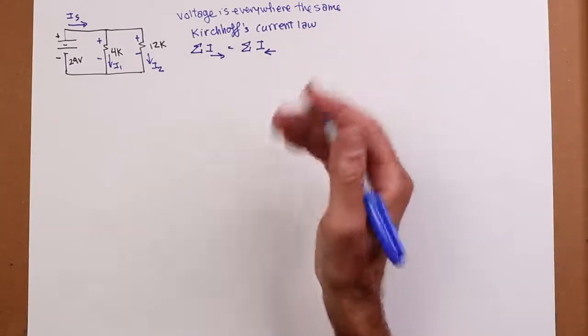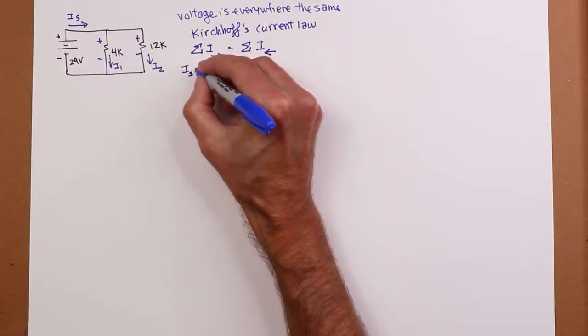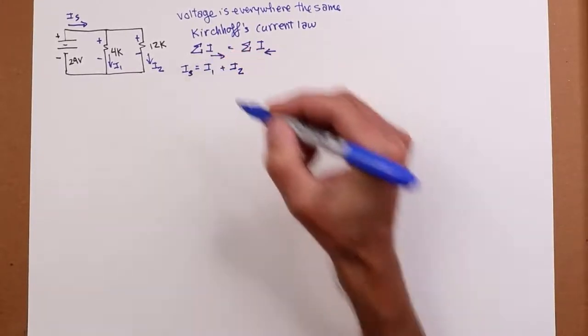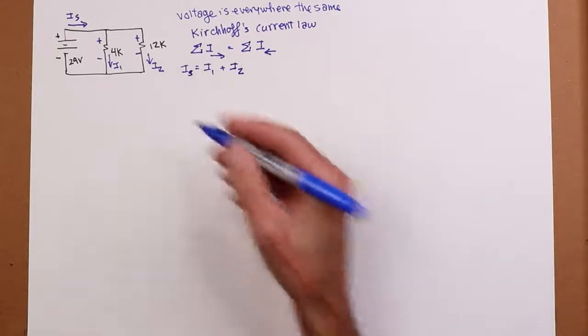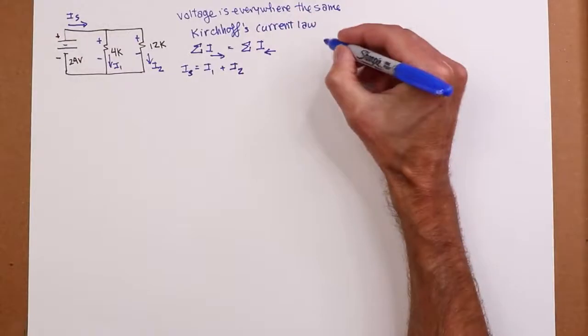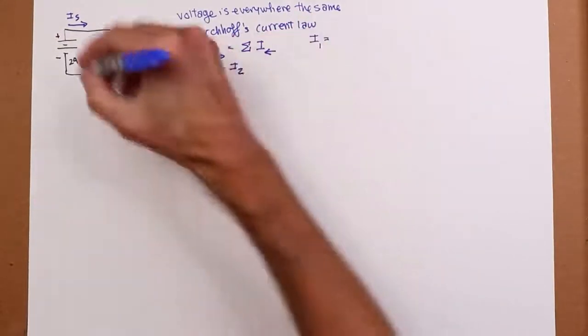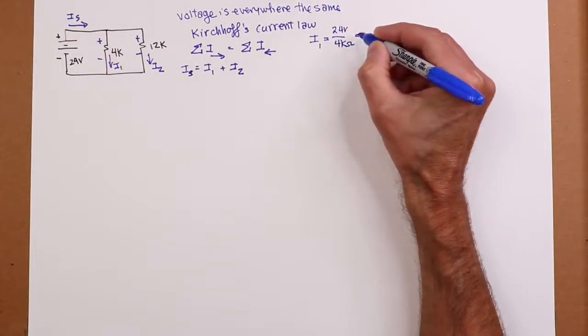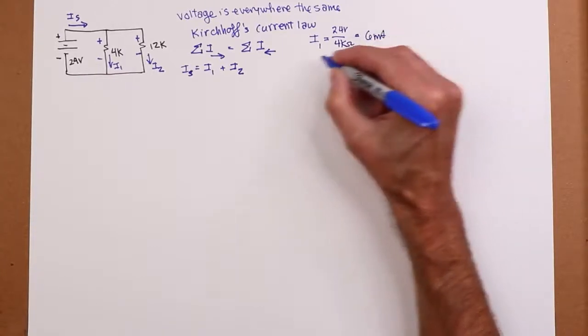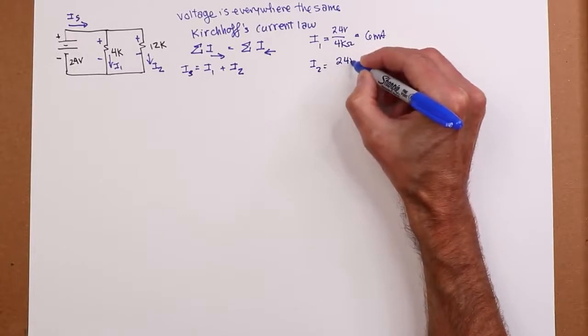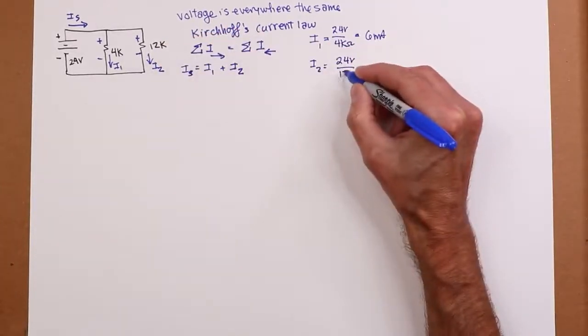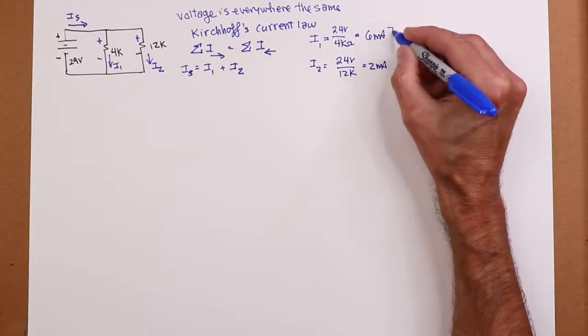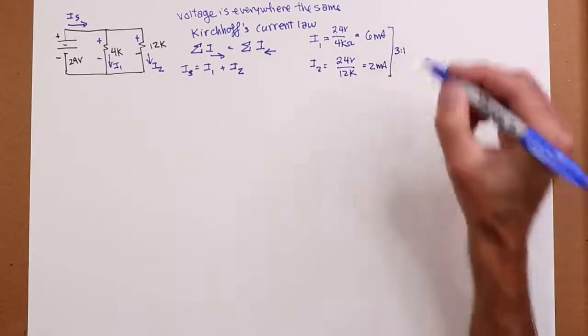Now, given that, we can say that Is has to equal I1 plus I2. How do we find those various currents? Well, a direct application of Ohm's law. The voltage is the same everywhere. So I1 would have to equal the 24 volts divided by R1, 4k. That's going to get us 6 mils. I2 would have to equal 24 volts divided by the 12k. And that is going to get us 2 mils. And before we go any further, I just want you to notice that's a 3 to 1 ratio in currents.